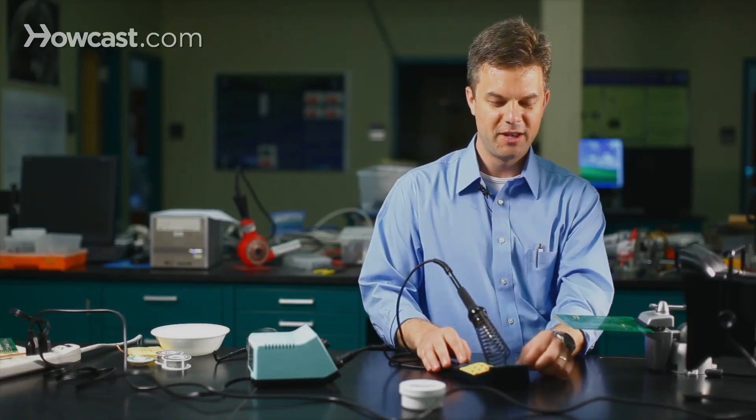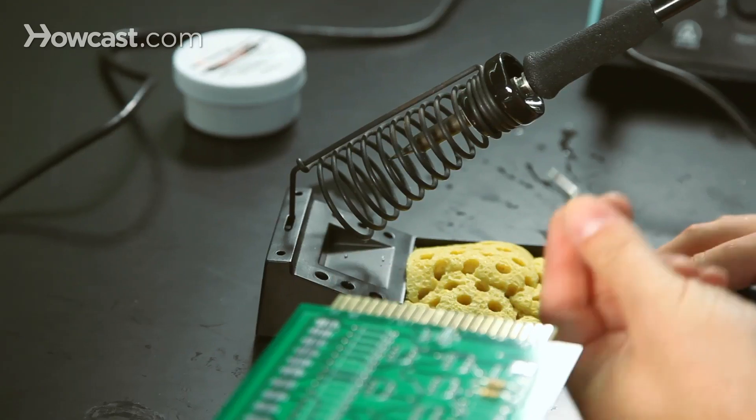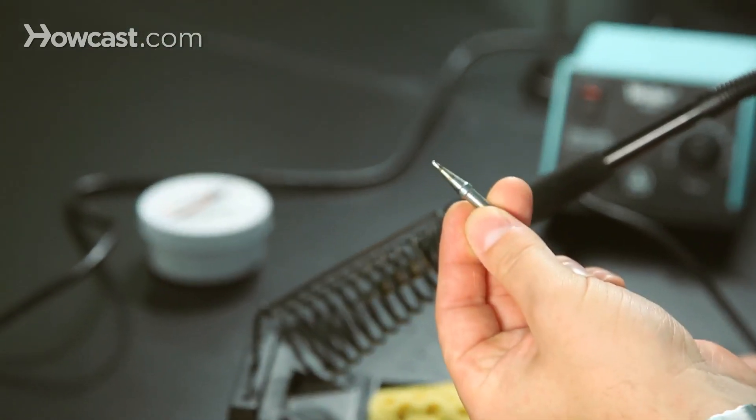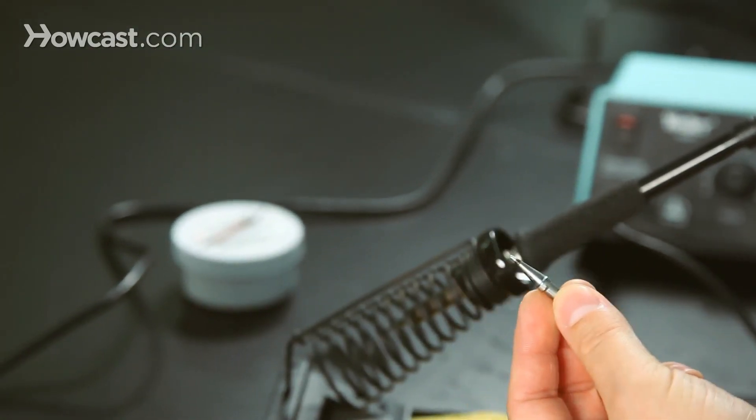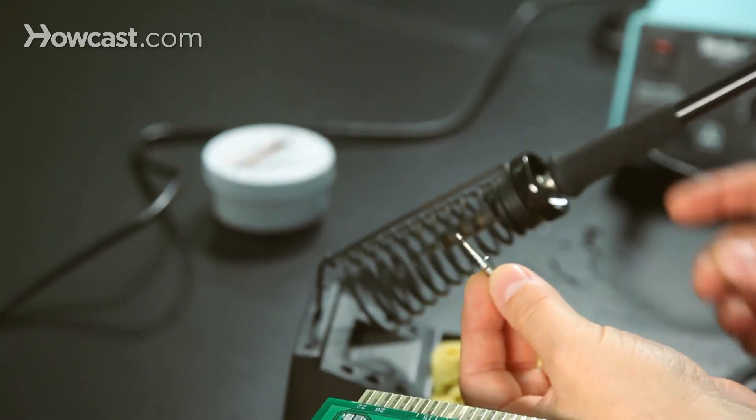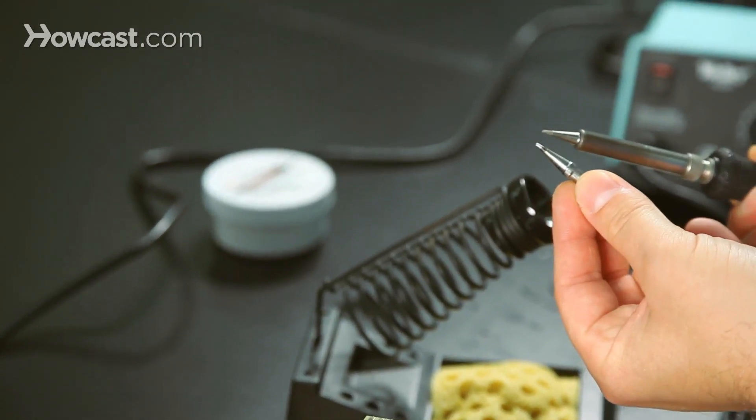As part of this stand, we have a number of holes on either side. These are to hold different tips that can be changed out if you have different style parts that you want to work with. This is a larger tip than what we have loaded in the iron at this moment.